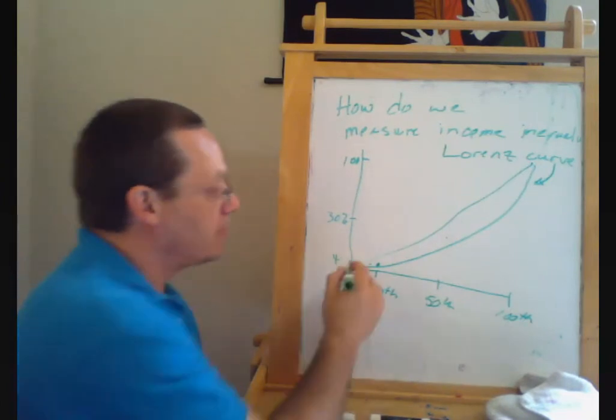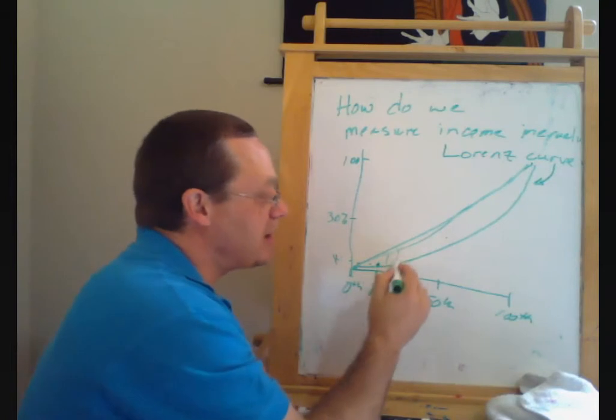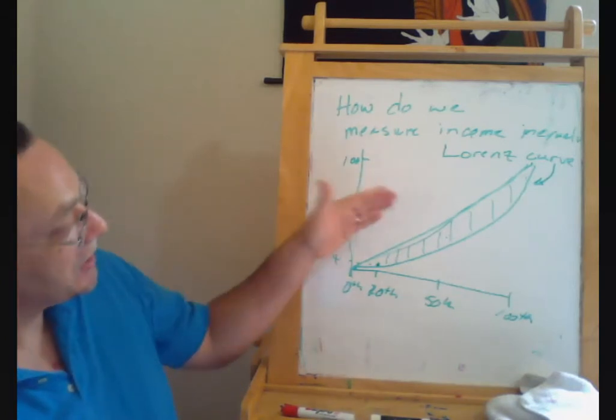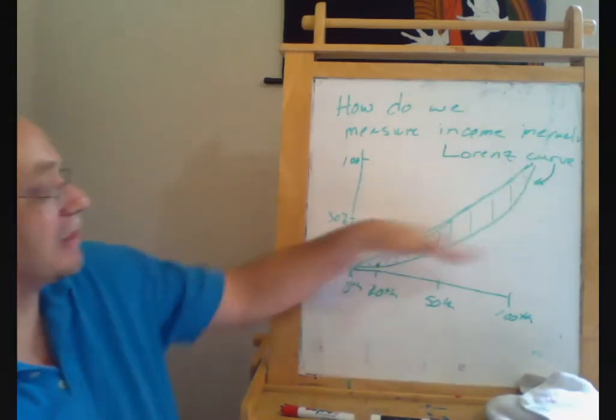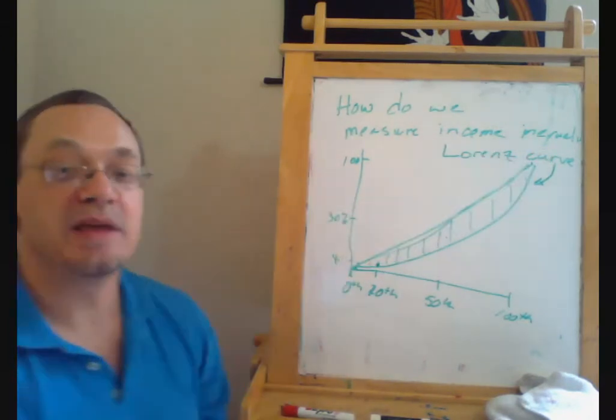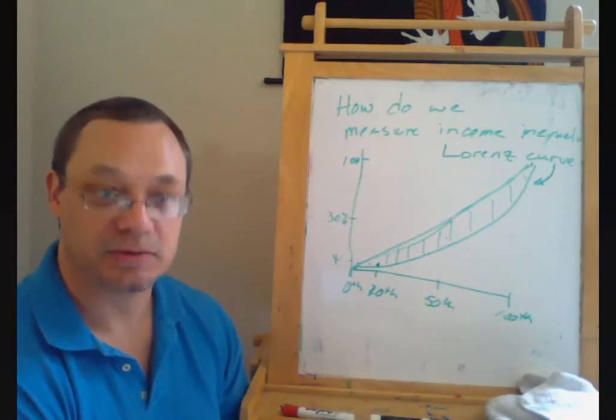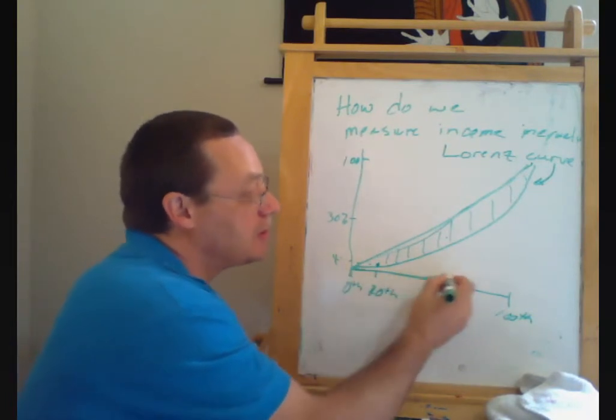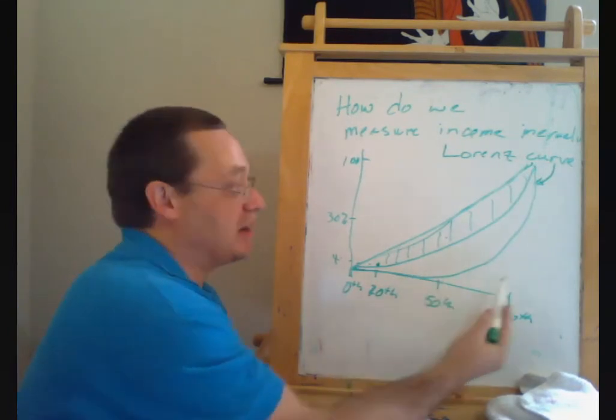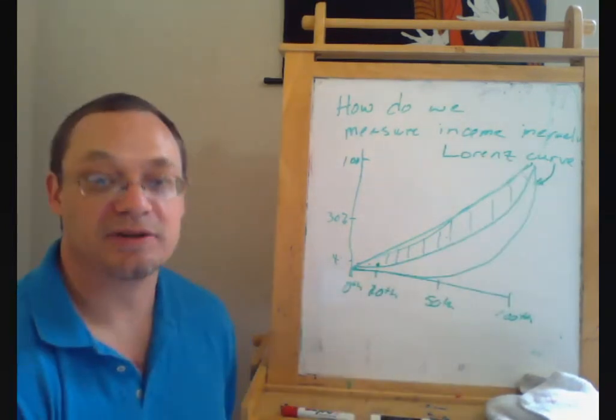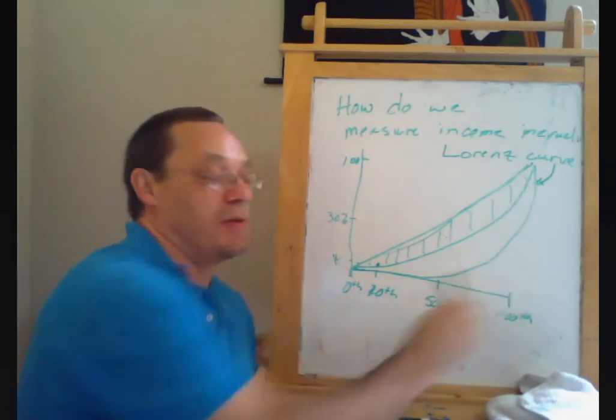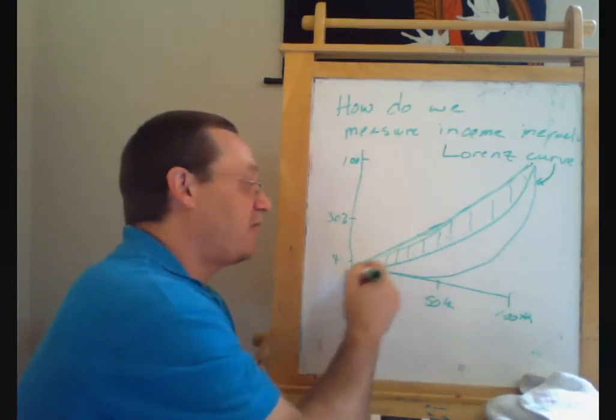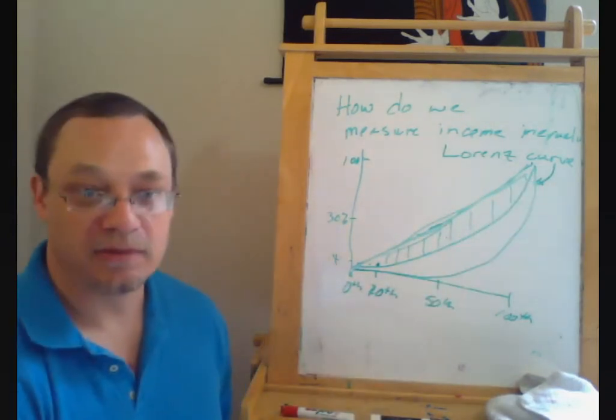And then we figure out what the area of this gap is. And this gap gives us the difference between the Lorenz curve and what the Lorenz curve would be if we had a completely equal distribution of incomes. And you can see that if incomes are more unequal, then this curve is going to be lower at the beginning and really rise quickly at the end because we don't really start adding up much of national income until we get to these last couple of people here.